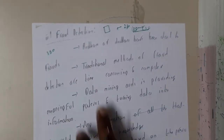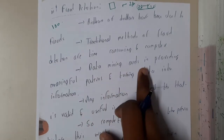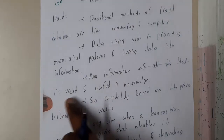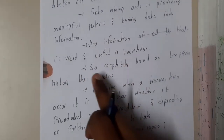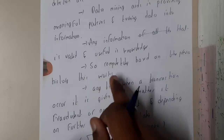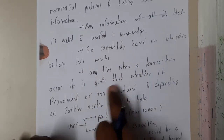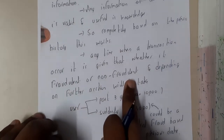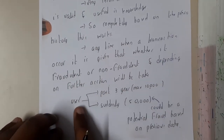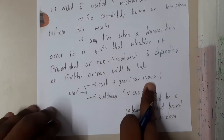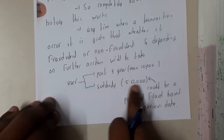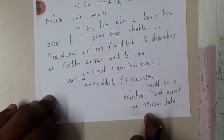Billions of dollars have been lost due to frauds. Traditional methods of fraud detection are time-consuming and complex. Data mining helps by providing meaningful patterns and turning data into useful information, which becomes knowledge. Based on previous transaction history, any new transaction is classified as fraud or non-fraud. For example, if a user always spends 10,000 per year for three years and suddenly withdraws 50,000, that situation flags an issue and gets detected.